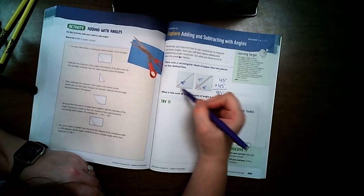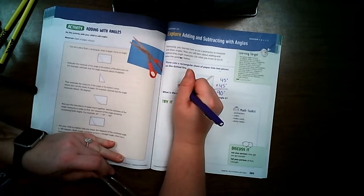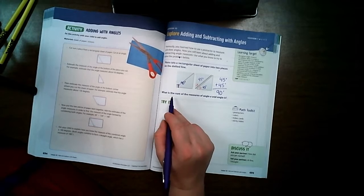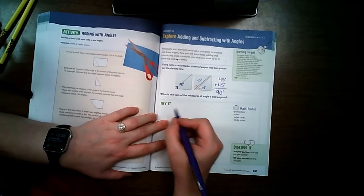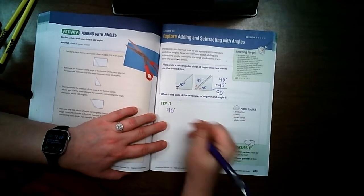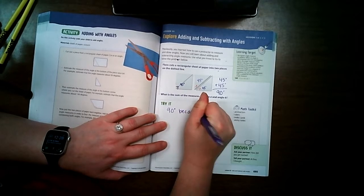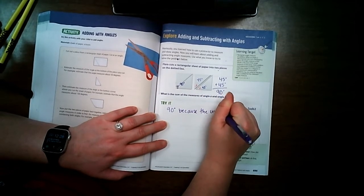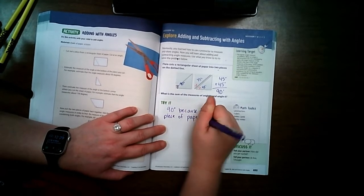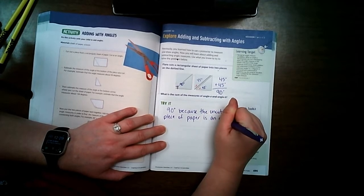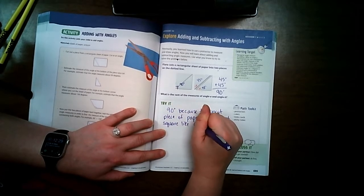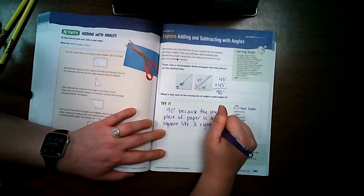Every time I see a corner that's a square like this, I'm going to know that it's actually a 90 degree corner, which is a right angle. So the question here is, what is the sum of the measures of angle A and B? The sum is 90 degrees because the uncut piece of paper is an exact square like a right angle.